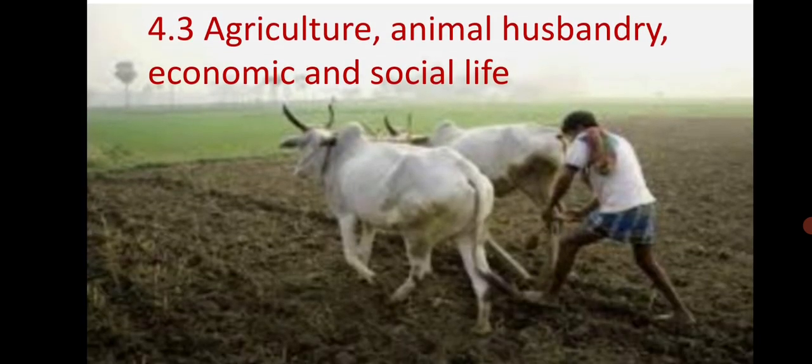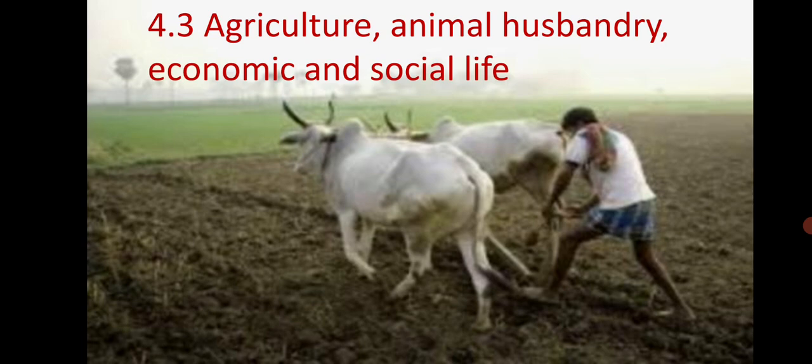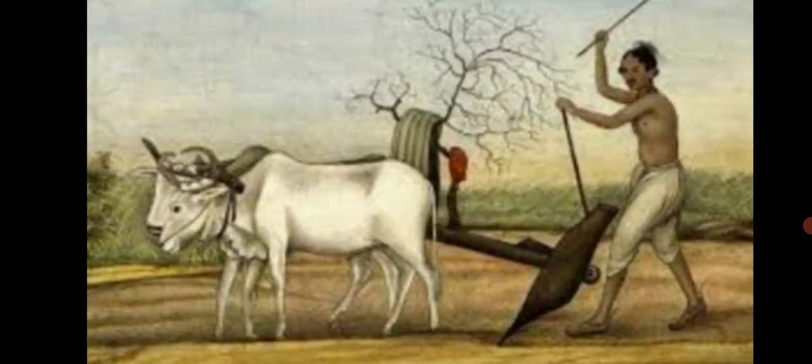Agriculture was the main occupation during the Vedic period. Many oxen were yoked together to plough the fields, and the plough had iron ploughshares. The Atharva Veda considers insects, pests, and other animals that destroy crops and suggests certain remedies. Cow dung was used as manure.